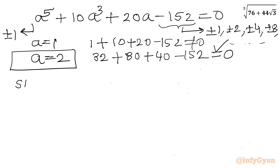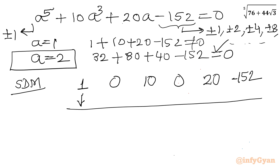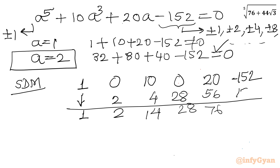Writing the coefficients of the quintic equation for synthetic division: coefficient of a power 5 is 1, coefficient of a power 4 is 0, coefficient of a cubed is 10, coefficient of a squared is 0, coefficient of a is 20, and the constant term is minus 152. Using root a equals 2: bring down 1, then 2 times 1 is 2, 0 plus 2 is 2, 2 times 2 is 4, 10 plus 4 is 14, 2 times 14 is 28, 0 plus 28 is 28, 2 times 28 is 56, 20 plus 56 is 76, 2 times 76 is 152, minus 152 plus 152 is 0.